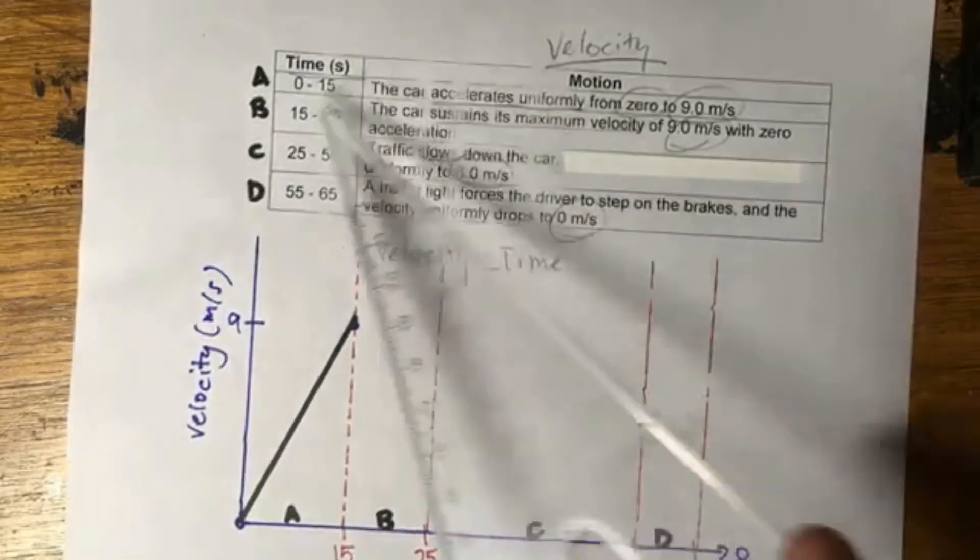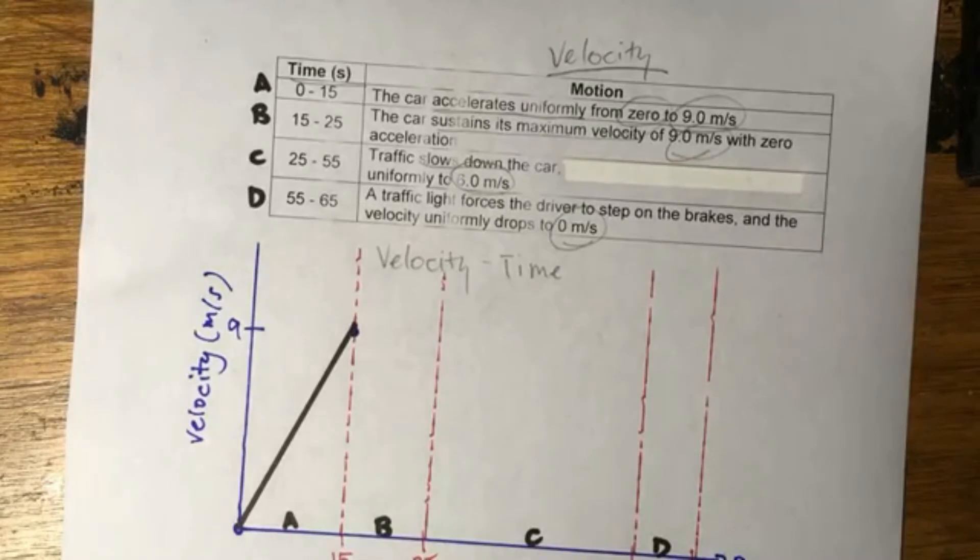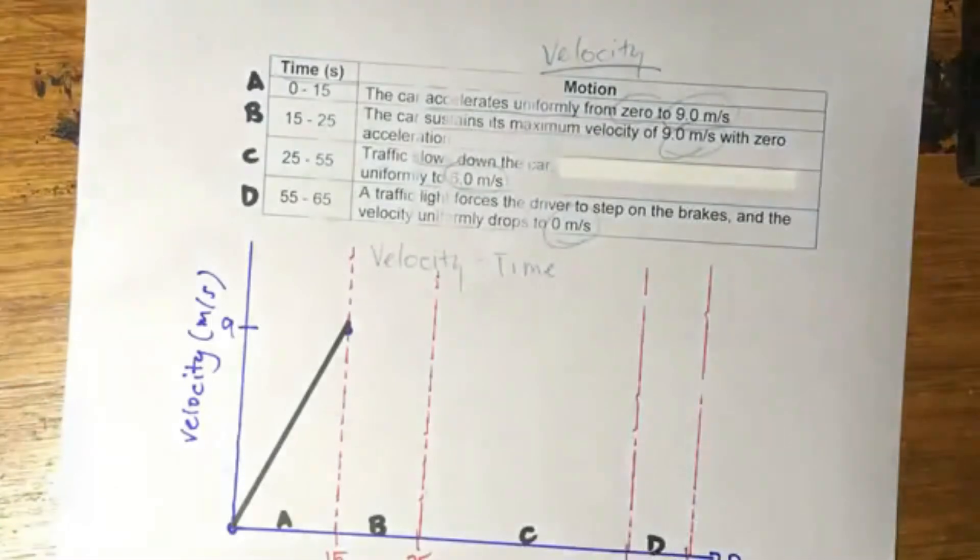So segment B, 15 to 25. The car sustains the maximum velocity of 9 meters per second with zero acceleration. So zero acceleration, what does that mean? It means that your velocity-time graph will look completely horizontal.